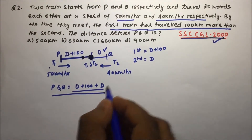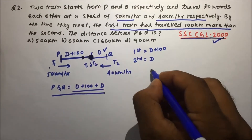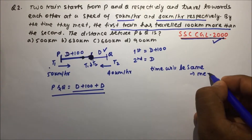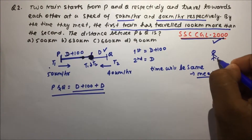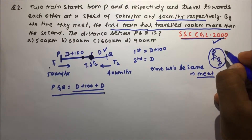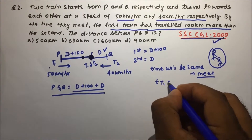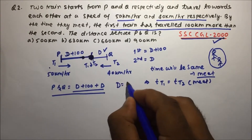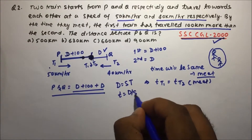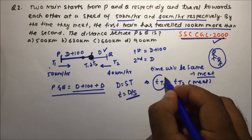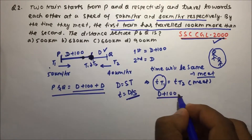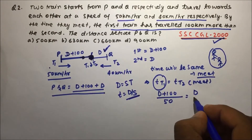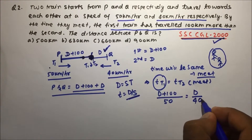When the two trains meet, the time elapsed is the same for both. Using D = S×T, the time for Train 1 is (D + 100) / 50 and the time for Train 2 is D / 40. Setting these equal: (D + 100) / 50 = D / 40.